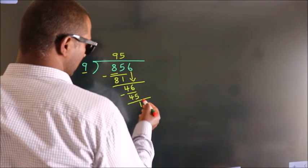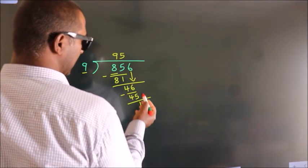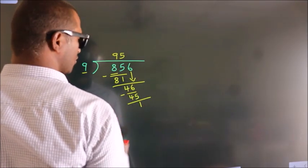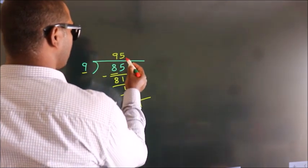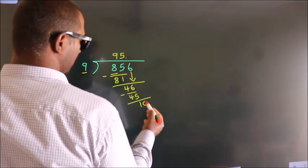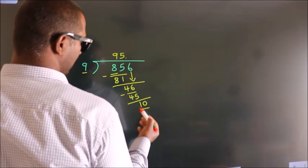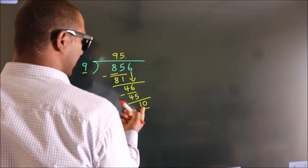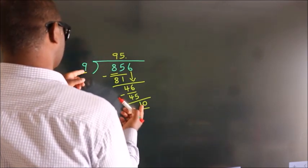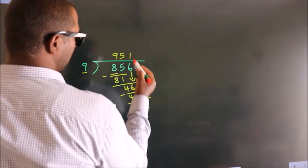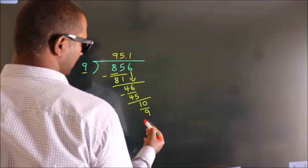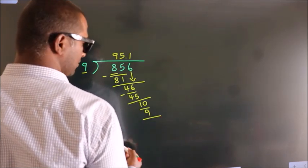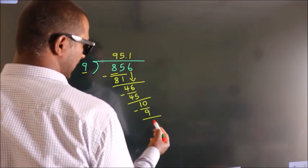After this, no more numbers to bring down. So what we do is, we put a dot and take 0. So 10. A number close to 10 in the 9 table is 9 times 1 equals 9. Now we subtract. We get 1.